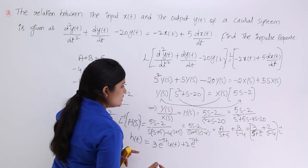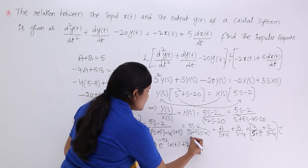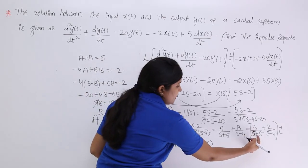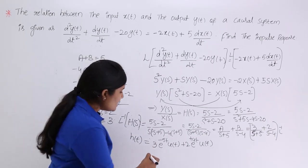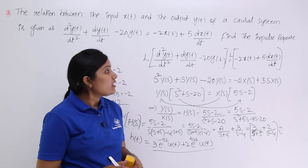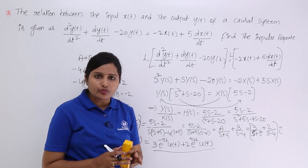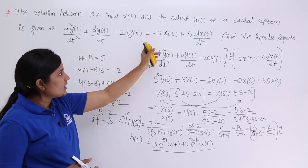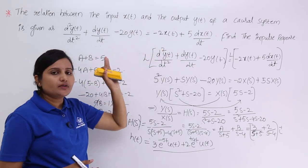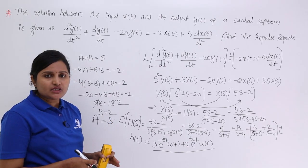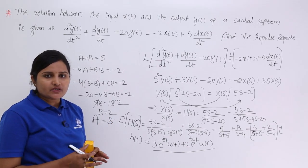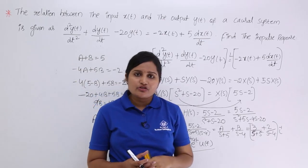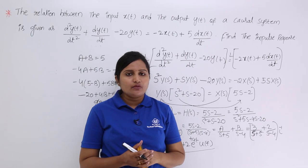So the impulse response of the system is h(t) = 3·e^(−5t)·u(t) + 2·e^(4t)·u(t). This is the impulse response whenever the relation between input and output is described by the differential equation d²y(t)/dt² + dy(t)/dt − 20y(t) = −2x(t) + 5·dx(t)/dt. This is how we solve for the impulse response using a differential equation relating the input-output response of a system.